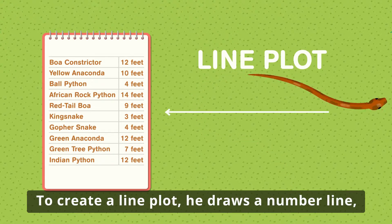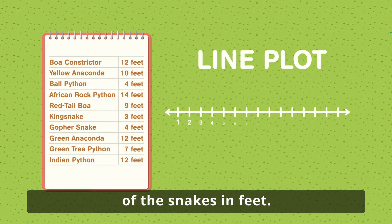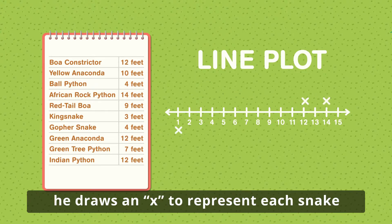To create a line plot, he draws a number line where the horizontal scale is the length of the snakes in feet. Using the data from the chart, he draws an X to represent each snake above its measurement.